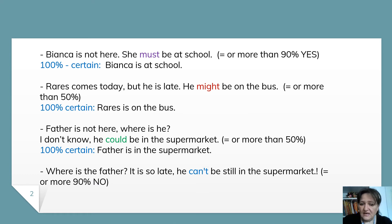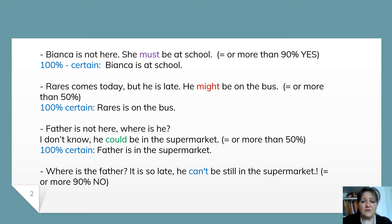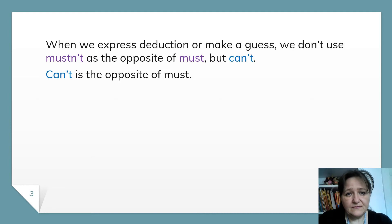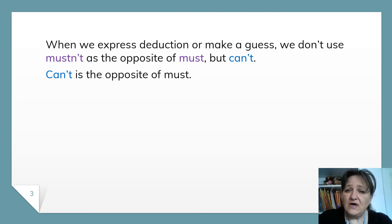Where is the father? It is so late. He can't be still in the supermarket — here, asks mother. So he can't be still in the supermarket. I use can't. I choose the modal verb can't to express 90% no. He can't be still in the supermarket — it's a guess, but it's 90% no. When we express deduction or make a guess, we don't use must and as the opposite of must — we use can't. Can't is the opposite of must when we express deduction.